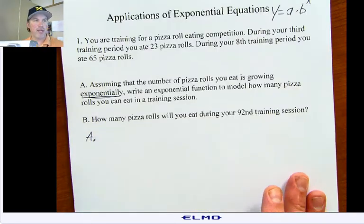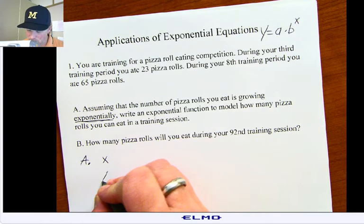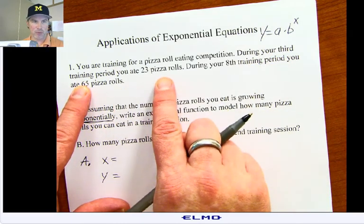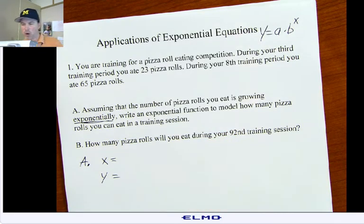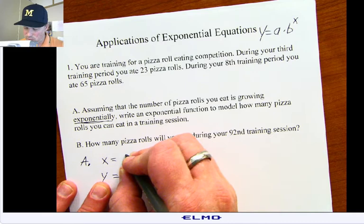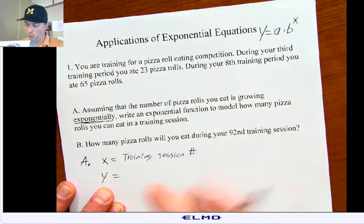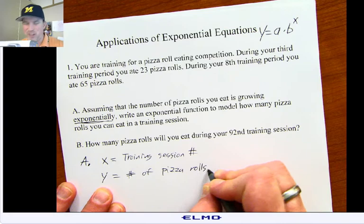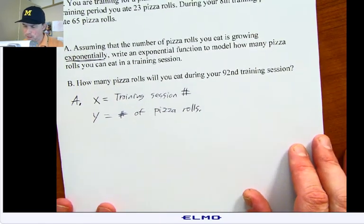Part A. I want to write an equation, and don't forget everybody, every equation needs variables x and y. The independent variable would be the training session number because the number of training periods affects the number of pizza rolls that you eat. So x is the training session number, and y would be the number of pizza rolls eaten. Do you remember that quiz a little bit ago that a lot of people got threes because they forgot to identify their variables? That's a lack of practice. Make sure you have good practice everybody.